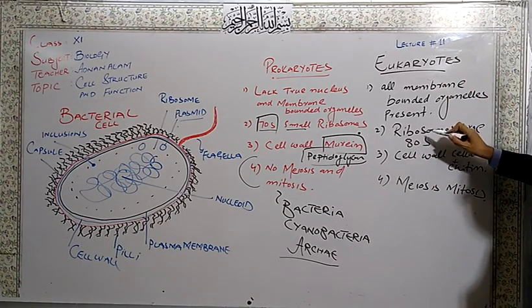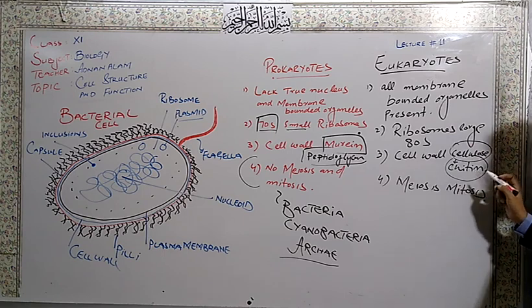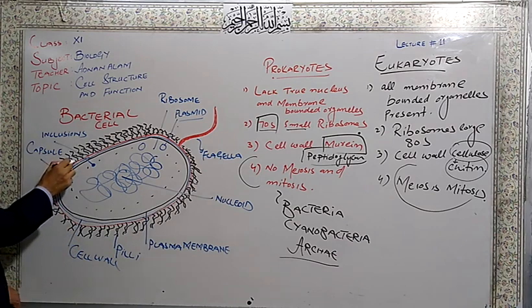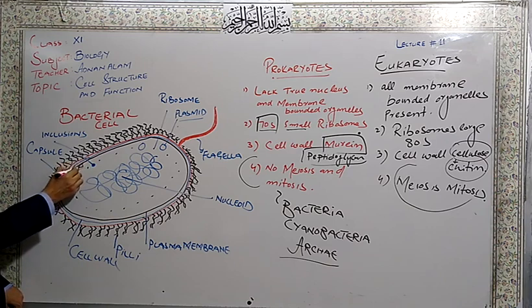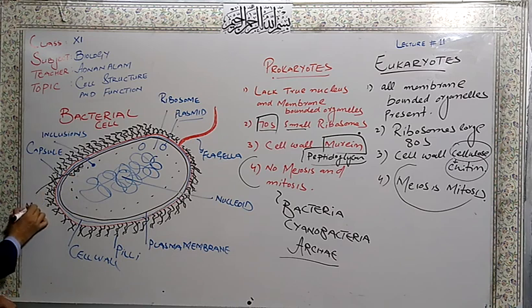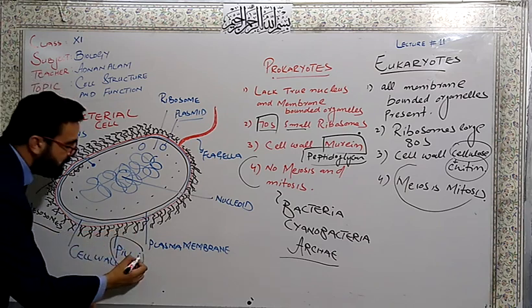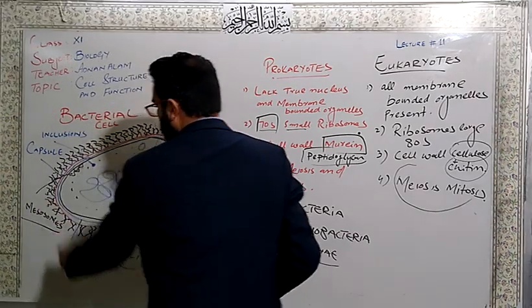While eukaryotes have all membrane-bound organelles, true nucleus is present, ribosomes are larger, cell wall is made of cellulose or chitin. Chitin may be present in fungi only. Meiosis and mitosis is present in normal cells. Now this is a prokaryotic cell - if you see, this is a bacteria having a capsule, then after capsule cell wall made of murein, and plasma membrane. Sometimes there are pocket-like structures and these pocket-like structures are called mesosomes.